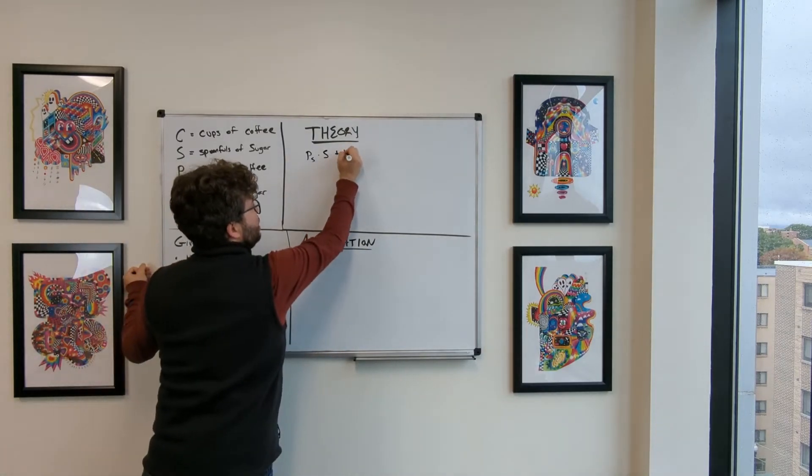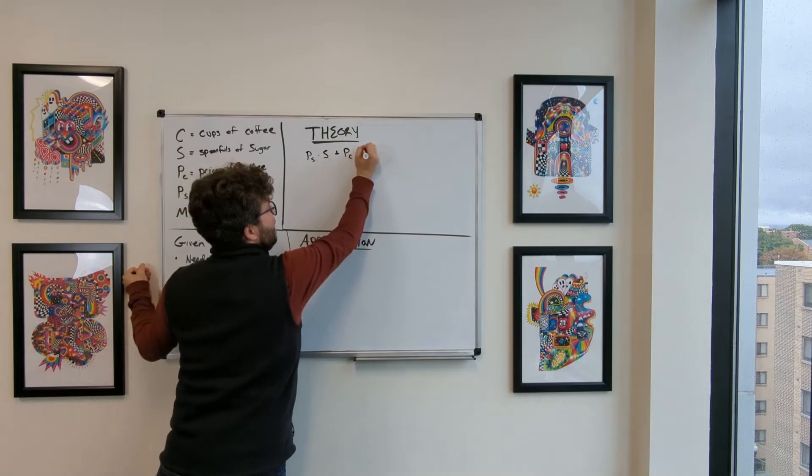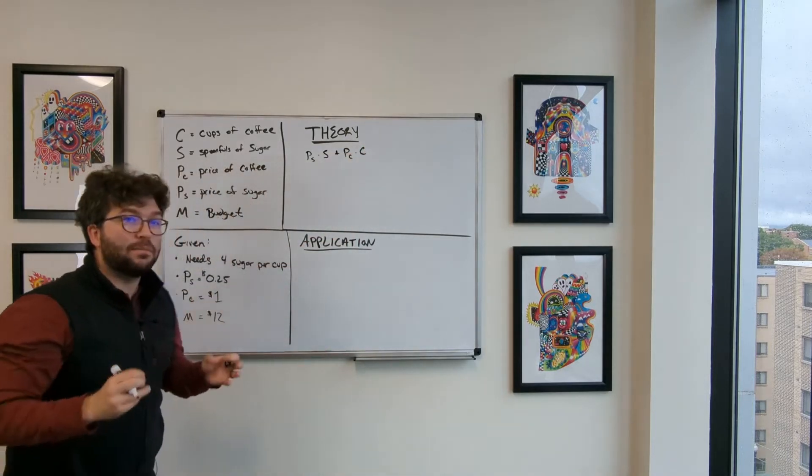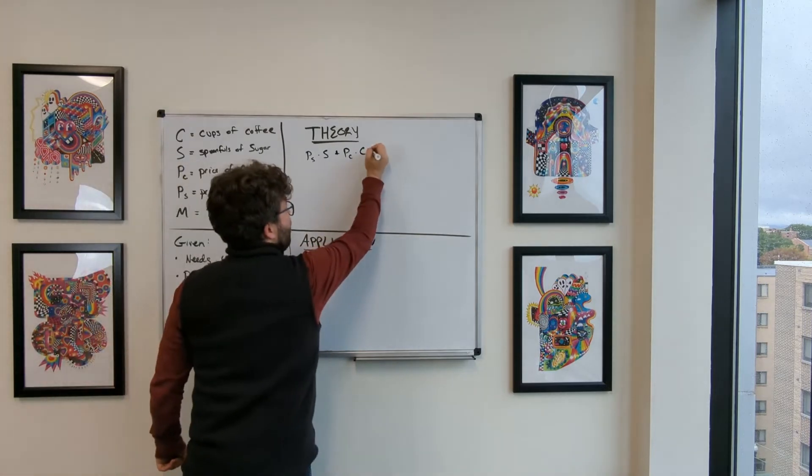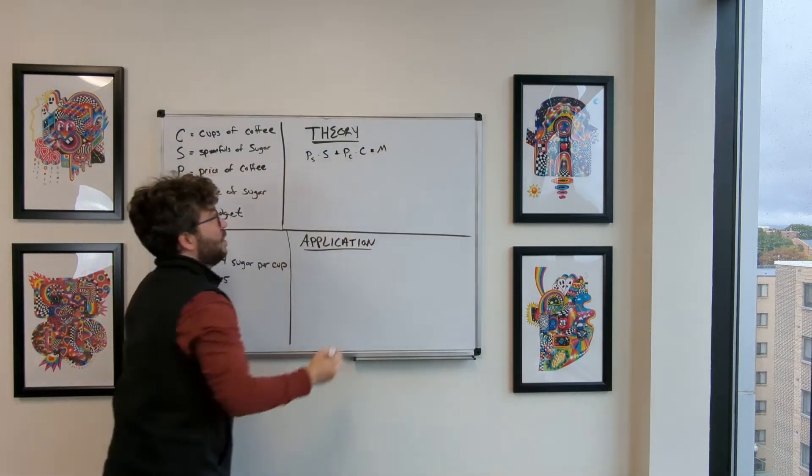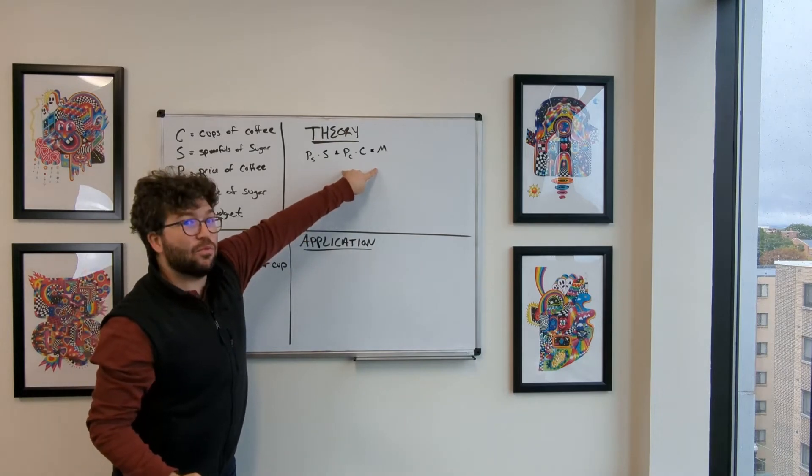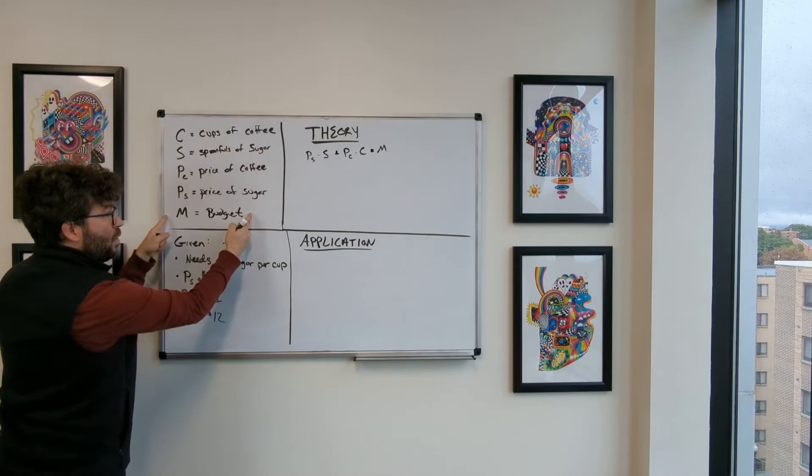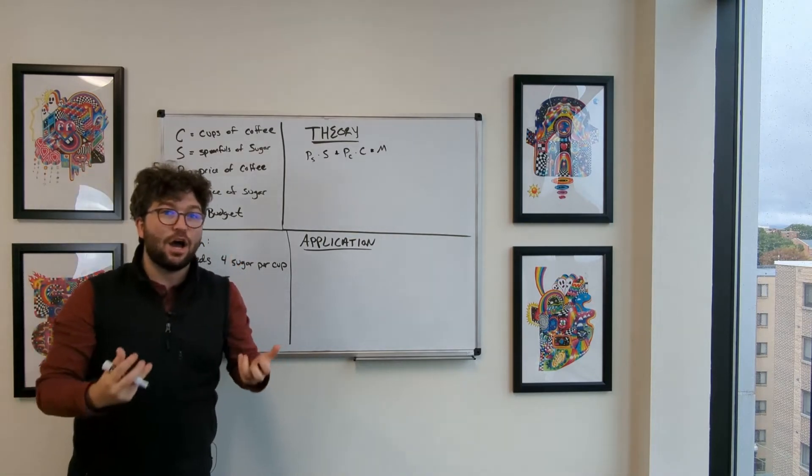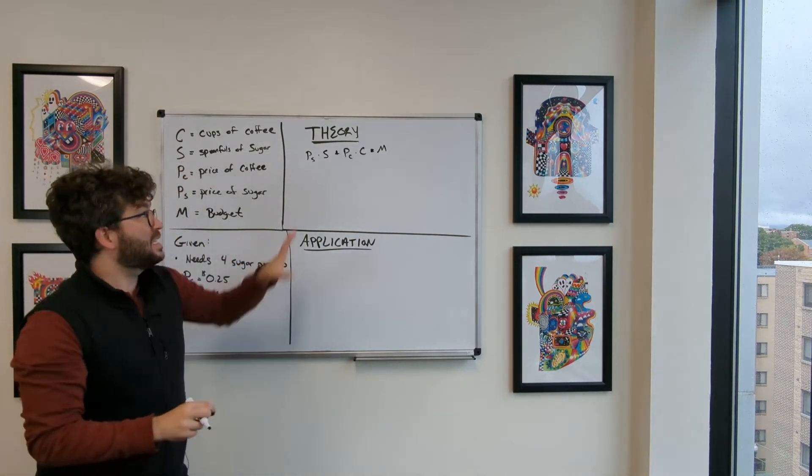But we're also going to see the price of a cup of coffee times the number of cups of coffee is going to be how much we spend on coffee. And therefore, that has to equal the total budget. If these are not equal, if I'm spending too much or too little, I'm not optimizing with the amount of money that I have to spend on these items.